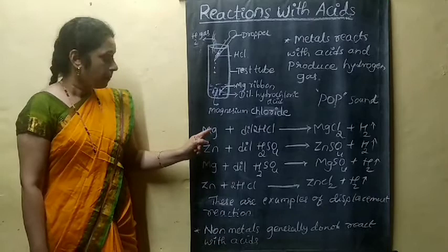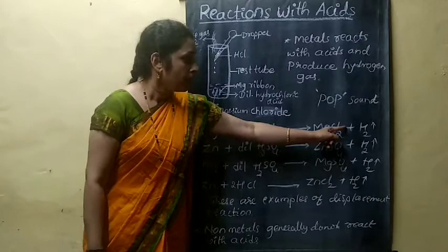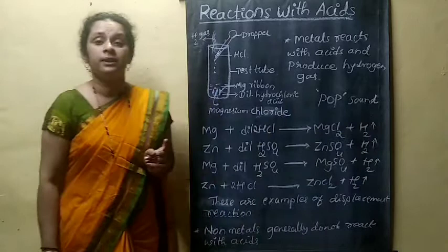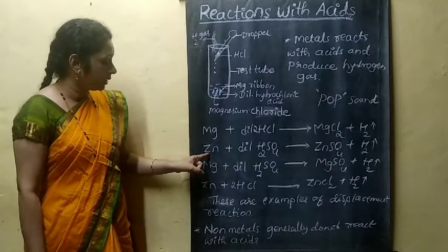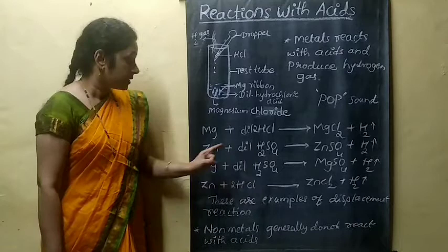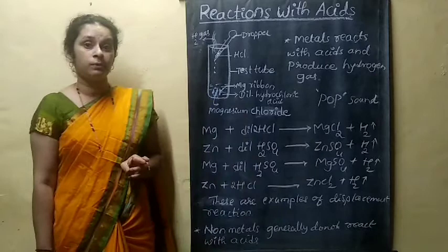Here are some reactions. Magnesium reacts with dilute HCl to form magnesium chloride (MgCl2) plus H2 gas (indicated by an upward arrow, meaning gas is released). Zinc reacts with dilute hydrochloric acid. Zinc also reacts with dilute sulfuric acid to form zinc sulfate (ZnSO4) and hydrogen gas is liberated.